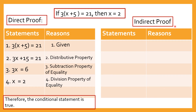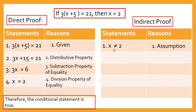For indirect proof, we are contradicting the conclusion. So your first statement should be x is not equal to 2, and your reason is assumption — you're assuming that x is not equal to 2. Then, number 2, you include what is given: 3 times the quantity x plus 5 is equal to 21, and the reason is given.